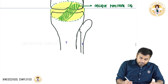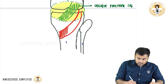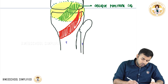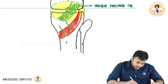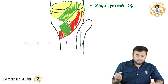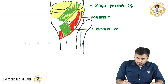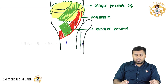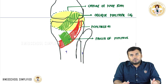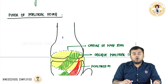After the oblique popliteal ligament, here you have a muscle — this muscle present here is called the popliteus muscle. And just above this popliteus muscle, you have a very important fascia covering it, called the fascia of popliteus. So the four important structures forming the floor of the popliteal fossa are: capsule of the knee joint, oblique popliteal ligament, popliteus muscle, and fascia of popliteus.